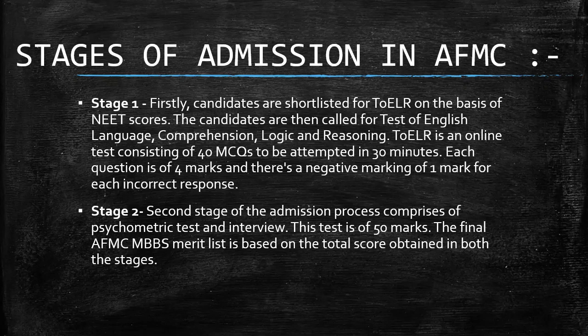The second stage involves a psychometric test and interview. The psychological test assesses your psychology, and a separate video will cover how to perform better in interviews. This psychometric and interview test is of 50 marks and carries a lot of weightage — the interview is the most important factor determining your chances of admission. After this, the NEET marks, TOE LR marks, and psychometric/interview marks are totaled, divided by four, and the final MBBS merit list is formed from the total score.